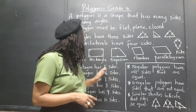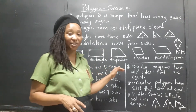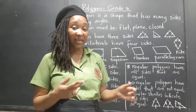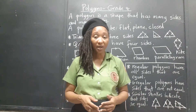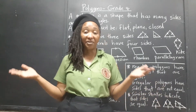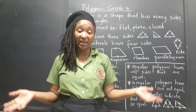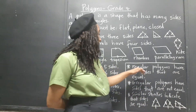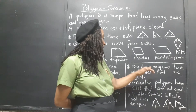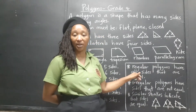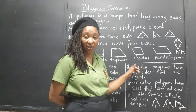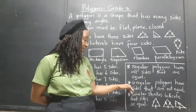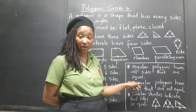Just because a polygon has five sides doesn't mean all five sides have to be equal — they can be five sides of different lengths and it's still a pentagon. When all sides of a polygon are equal, we say it's a regular polygon. When the sides are not equal, we say it's an irregular polygon.